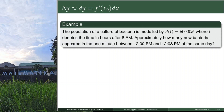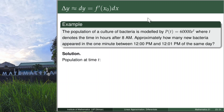The new bacteria that appeared between 12 and 12.01 is the population at 12.01 minus the population at 12 p.m. — that's a change in population, delta P, approximated by dP. To find dP, we differentiate P with respect to T: dP = 60000 e^T · dt.